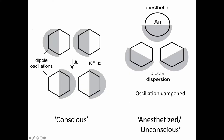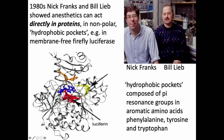The basic idea about anesthesia is that the oscillations of pi resonance groups in the brain go on when you're conscious, and then anesthesia comes in and by dipole dispersion dampens those oscillations, causing loss of consciousness. The question is where in the brain this happens. It was initially thought anesthetics bind in lipids, but it turns out they act directly in proteins — Nick Franks and Bill Leib found this in the 1980s — inside proteins in nonpolar regions which have aromatic rings.